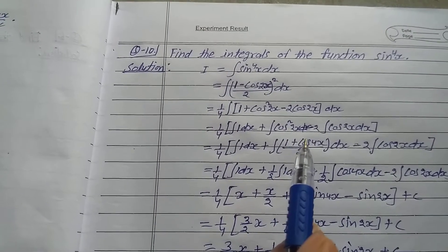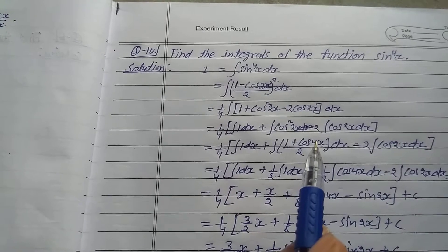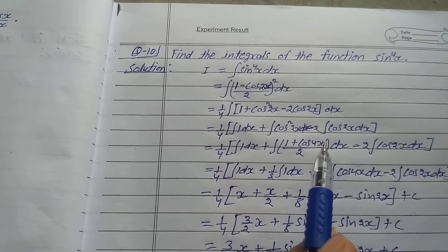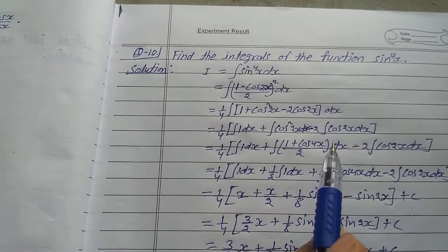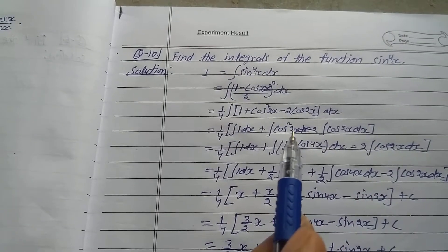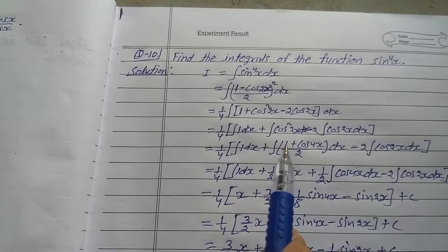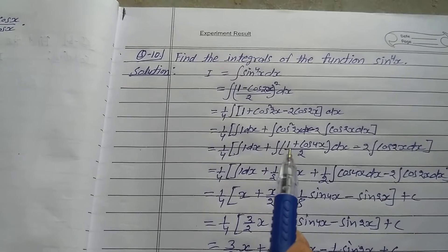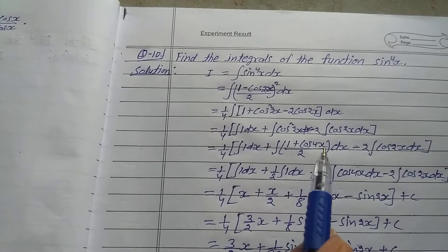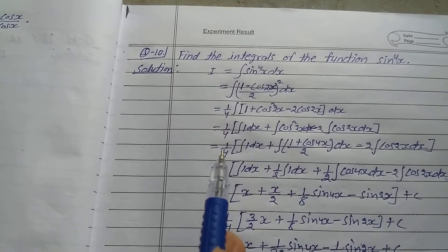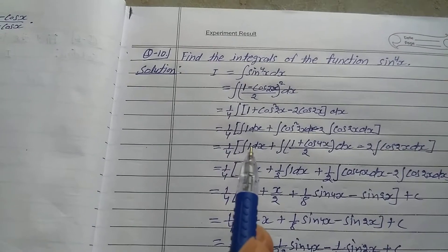Using the formula cos2a = 2cos²θ - 1, cos²2x is written as (1 + cos4x)/2.